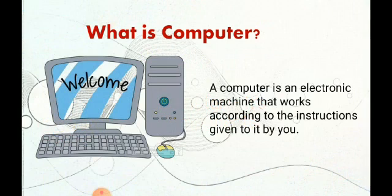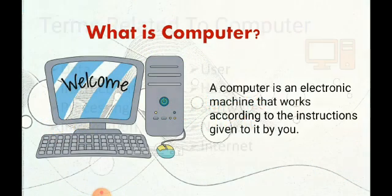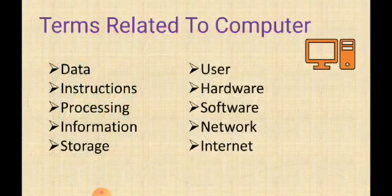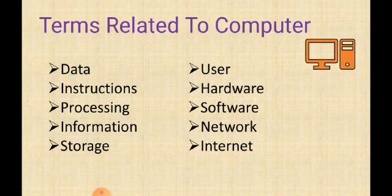I have used some terms in this definition. So let's discuss these terms. First, data. Data is the collection of unorganized facts, that means raw facts. When we say 2 plus 5 is equal to 7, that means it's the information because it has been processed. Information is processed data.